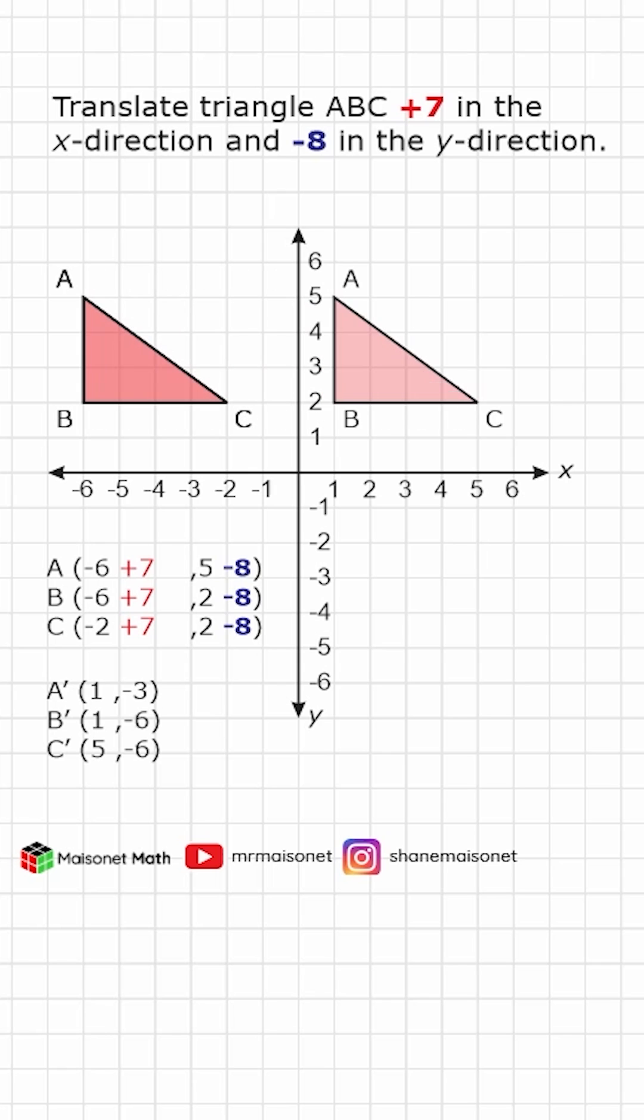And if we translate our triangle 7 units to the right and 8 units down, we can see that the vertices of our triangle have the coordinates that we have displayed right here.